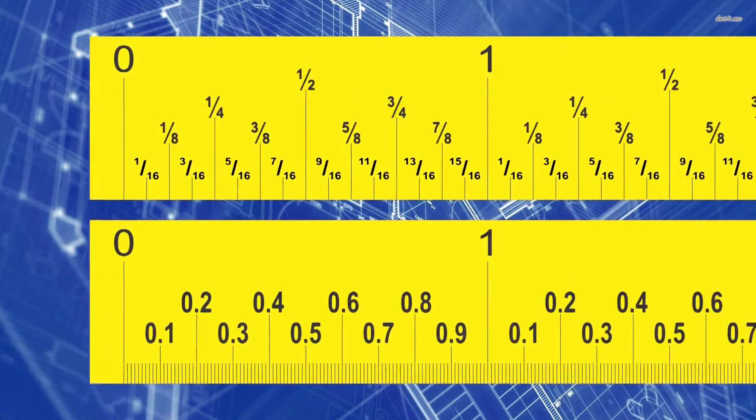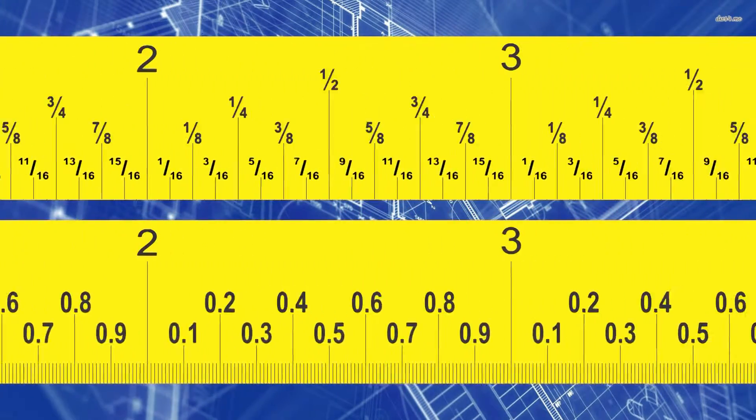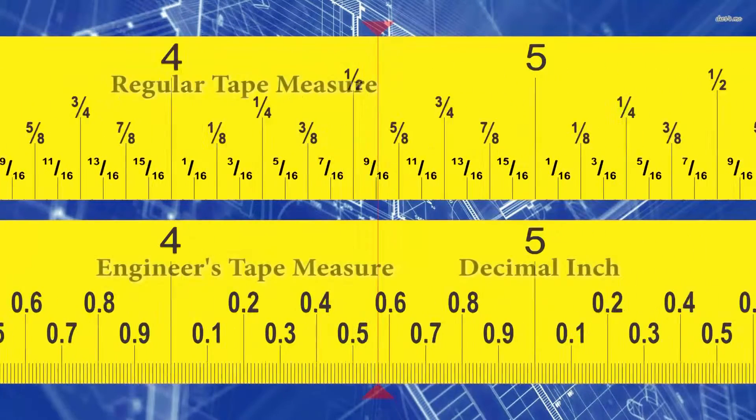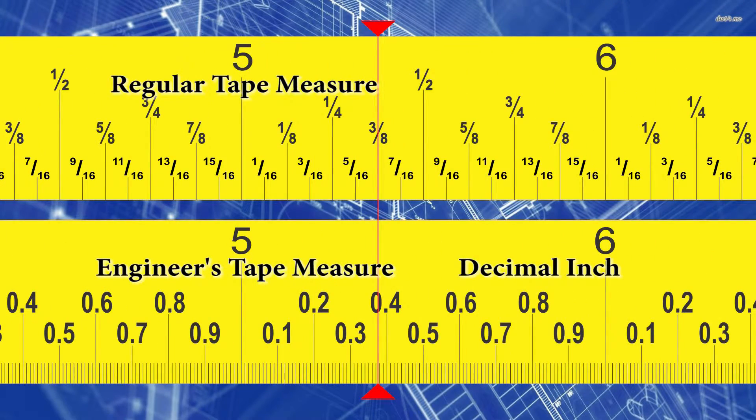Now let's take a look at our tape measures to see if our answer is correct. Let's make a line from five and three-eighths inches on a regular tape measure down through our engineer's tape measure, the one with the decimal inches.